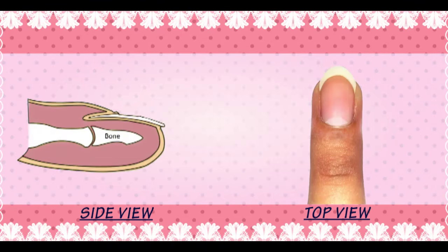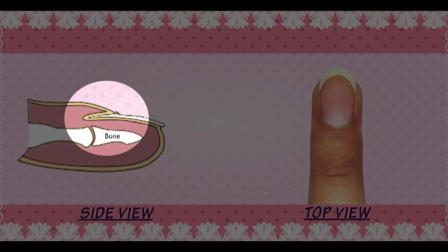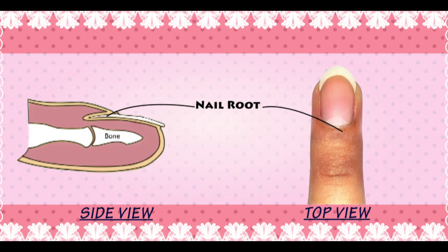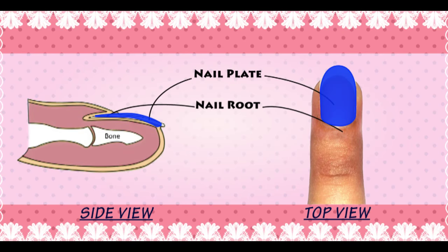Before I answer the question asked by our viewer, we all need to know the structure of a human nail. The part that we see on our fingertip is not the complete nail — there is a hidden portion inside the finger which is not visible to us, and that is called the nail root. The portion that we actually see on top of the finger is called the nail plate.